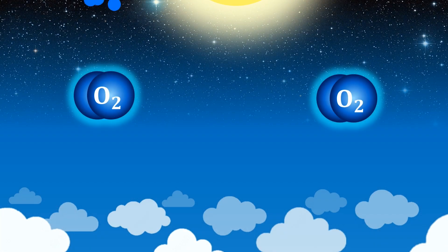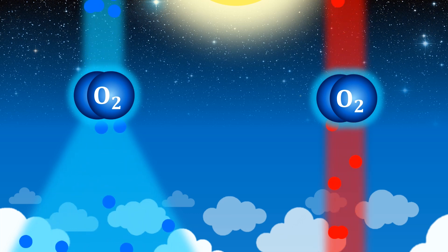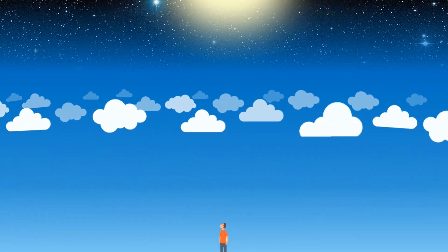When blue light hits oxygen in the atmosphere, it's deflected or scattered much more than red light is. So why does this make the sky appear blue?